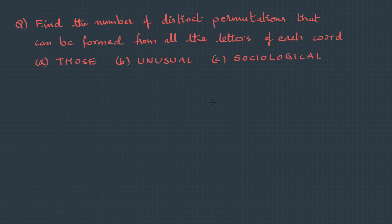Let's pick up the first one: THOSE. Here we have distinct objects and the number of objects is five, therefore the number of permutations is n factorial, that's five factorial which becomes 120.